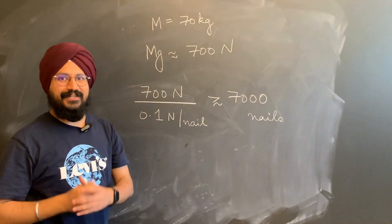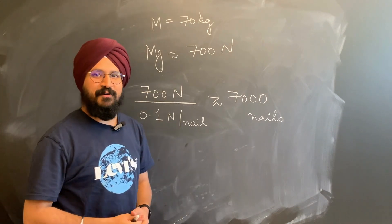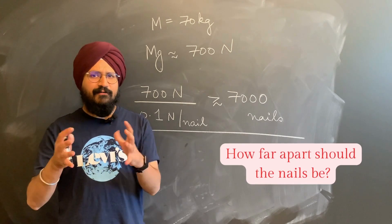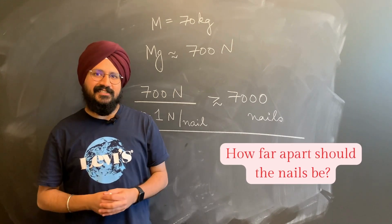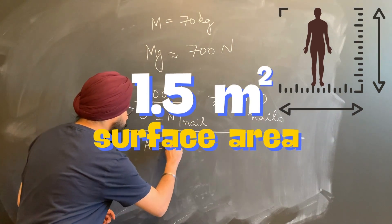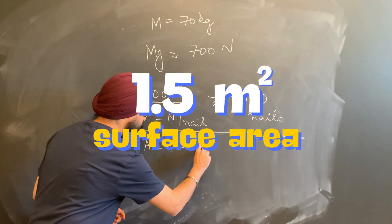Now, that's a lot of nails. But that's what keeps them from getting poked and prodded too much at night. So, how far apart should you place the nails? The average human body has a surface area of about 1.5 meter square.